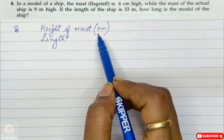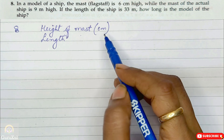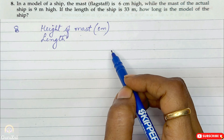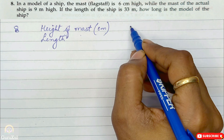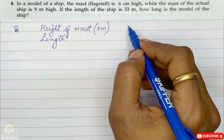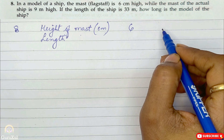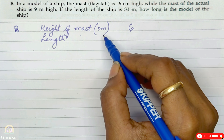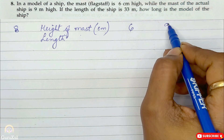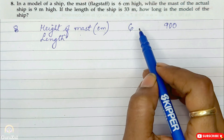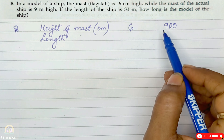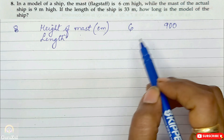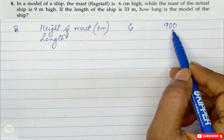The height of the mast: the model's mast is 6 cm high, while the actual ship's mast is 9 meters high. Since units are different — one is meters and the other centimeters — we convert meters to centimeters: 9 meters becomes 900 cm. We have written the heights of both the model and the actual ship's mast.